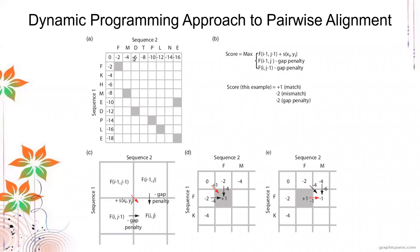The scores then decrease: minus two, minus four, minus six. There is a penalty or decrease in the scores corresponding to the gap penalty scores — minus two, minus four, minus six. Those are the gap penalty scores that you have.